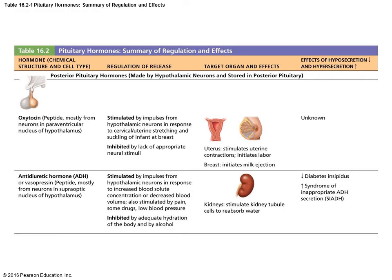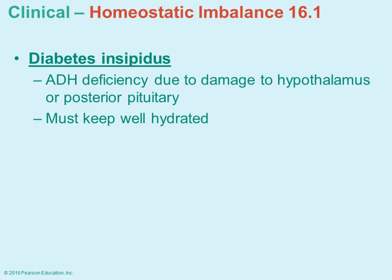There is a table summarizing both oxytocin and antidiuretic hormone — stored in the posterior pituitary — showing how they are stimulated, how they are inhibited, and what the target organs are. A chart like this is recommended for studying, as you need to be familiar with what hormones are produced where, how they are stimulated, what the target cell is, and the effects of too much or too little of each hormone.